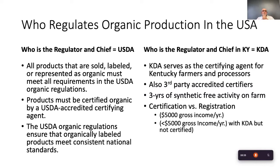Who regulates organic production in the U.S.? That is the USDA. All products that are sold as organic must be labeled as such and follow USDA regulations. They must be certified organic by a USDA-accredited certifying agent, and that responsibility has shifted to the states — in this case, the KDA, the Kentucky Department of Agriculture. There are also third-party accrediting parties available within the state. The USDA organic regulations ensure that if you carry the label, you follow all requirements and standards set by the USDA.